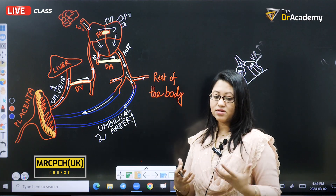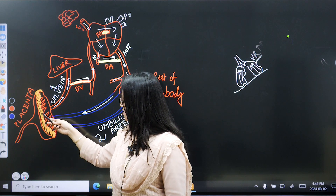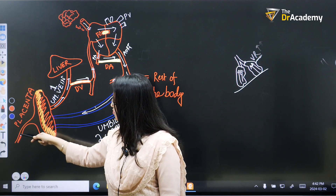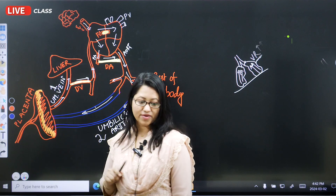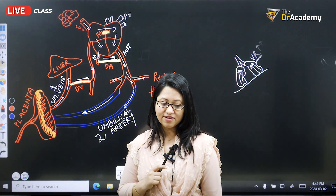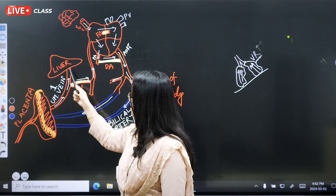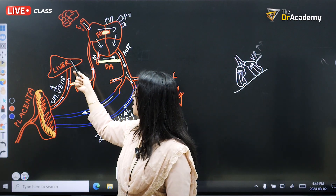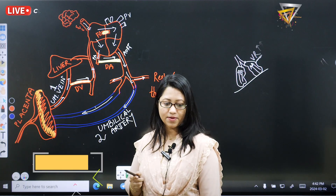The oxygenation is done by the mother. The mother gives oxygenated blood through the placenta to the fetus. From the placenta, the oxygenated blood comes to the umbilical vein first. With this umbilical vein, some blood will go to the liver, and after the portal circulation, it is also connected with the inferior vena cava.